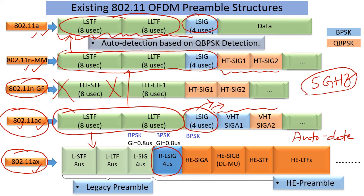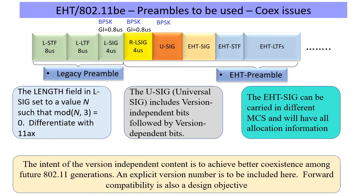So what does 11be EHT, or Wi-Fi 7, do about this? Remember, it also has to operate in 2.4, 5, and 6 GHz where previous generations will use these types of PPDUs, so it obviously has to be friendly with them. It starts off in a similar way. For previous generation compatibility, auto-detection comes by repetition — but there is a slight difference in the length signal between 11ax types and 11be Wi-Fi 7 types, which allows them to be distinguished.